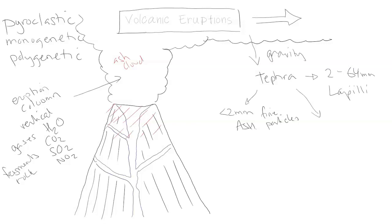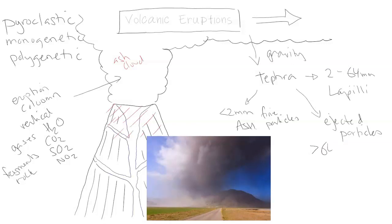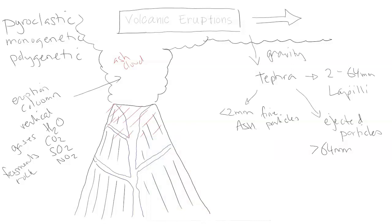For more explosive eruptions in the VEI 3, 4, 5 and onwards range, you could get what are called ejected particles — larger than 64 millimeters. This could be the size of small cars or a small apartment, depending on the volcano. The energy and trapped pressure from the gases, combined with the type of magma — usually andesitic, dacitic, or very rarely rhyolitic — drives the eruption.